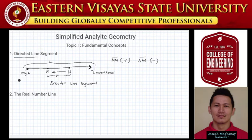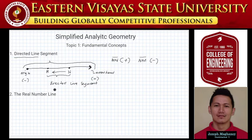If the direction is going back to our origin, the sign of this line segment is negative. If it is going toward the arrowhead, the sign of the line segment is positive. I hope that our directed line segment is clear by now.